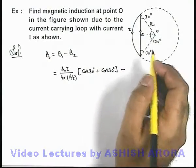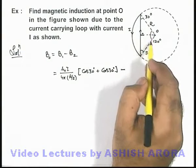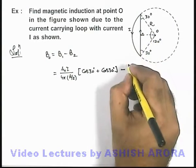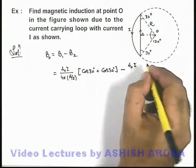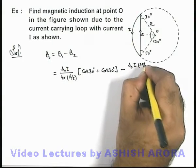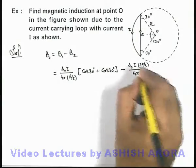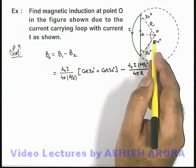Minus magnetic induction due to the circular arc which is subtending an angle 120 degrees at the center. The result for which we write is μ₀I θ by 4π r, so θ here you can write as 2π by 3, divided by 4π r. This is the result we use for magnetic induction due to a circular arc.